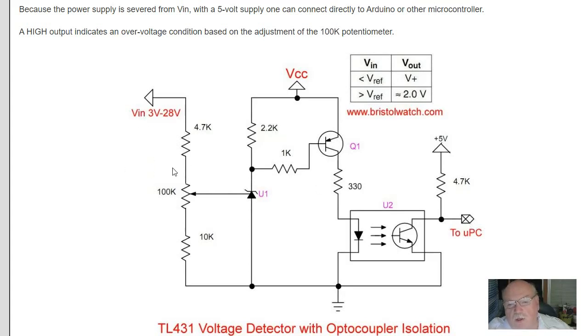So, when VIN meets or exceeds the trip point set by the 100K, U1 turns on, Q1 turns on, and it turns on the optocoupler and the output goes low.